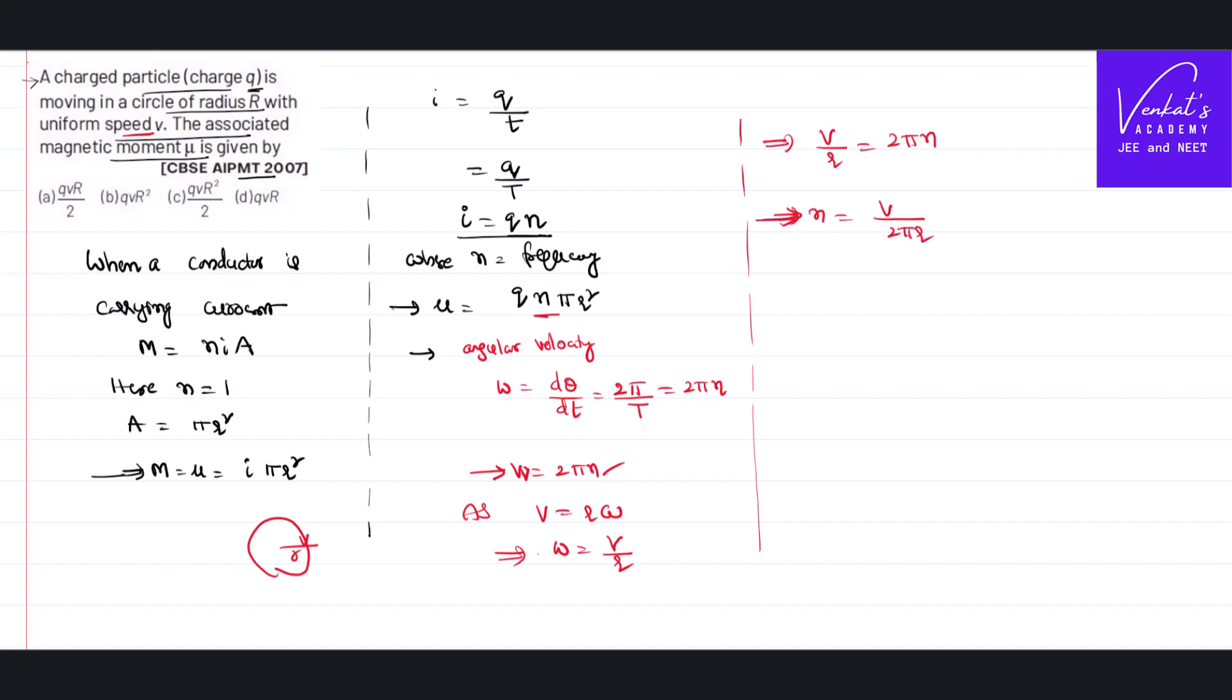Substitute this n value in the formula that we had got for magnetic moment. That implies magnetic moment of charged particle is what we have got is Q n pi r square where n is frequency,